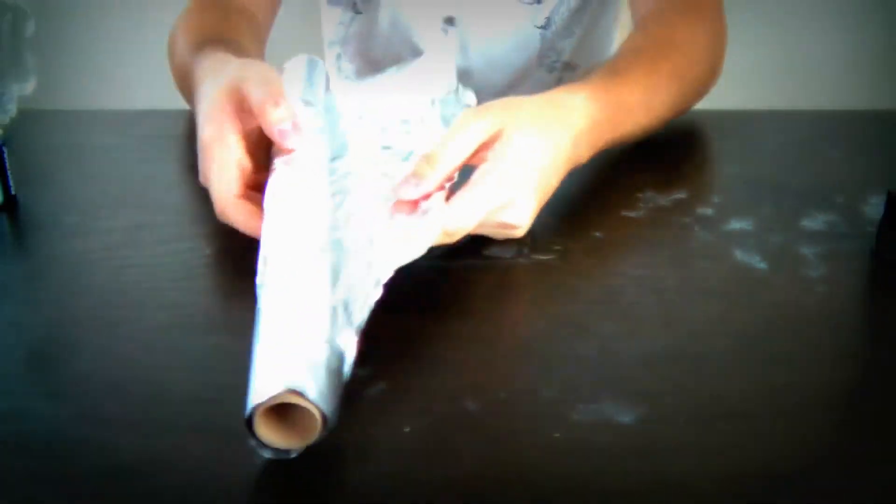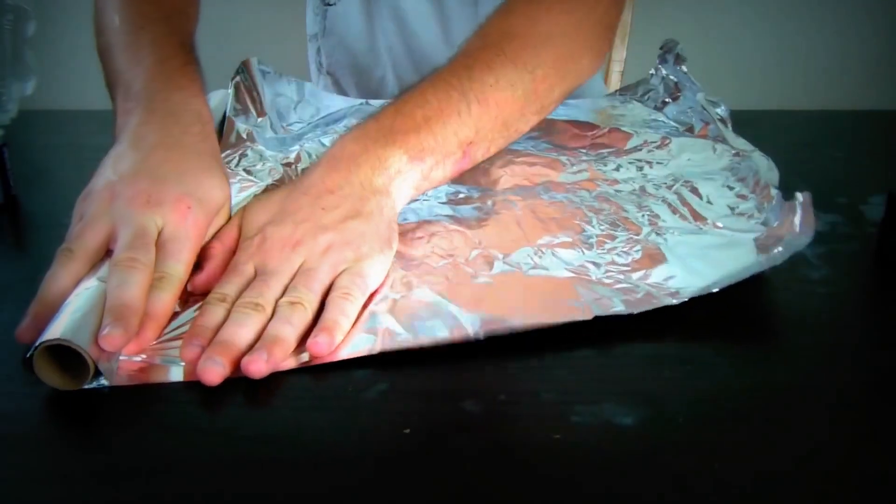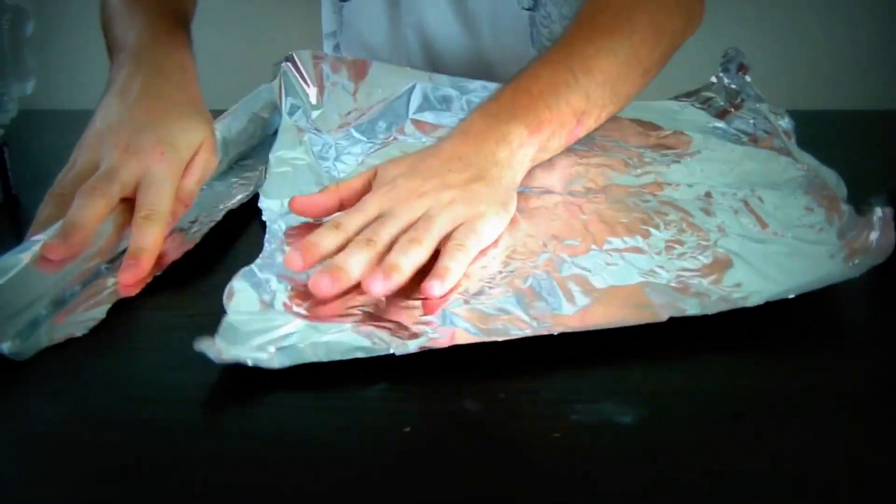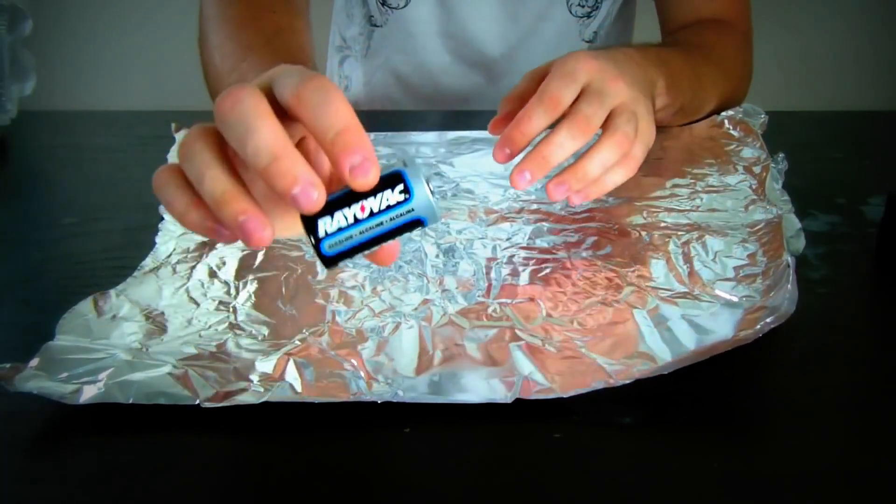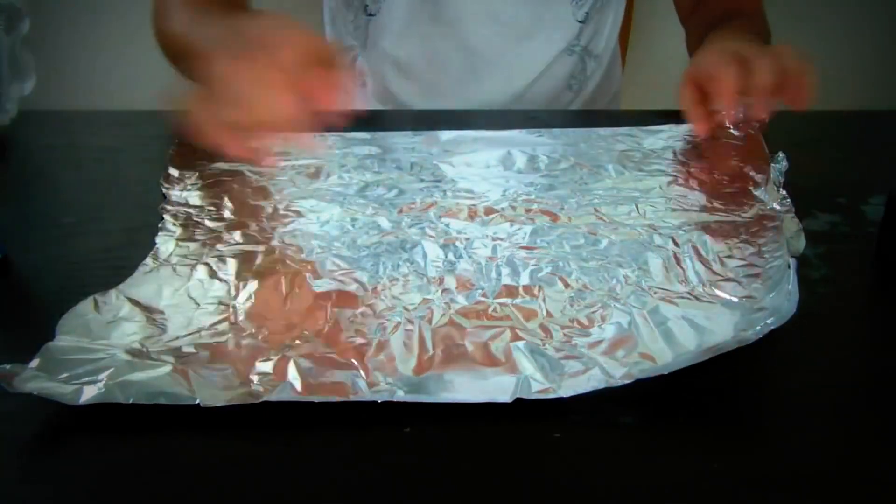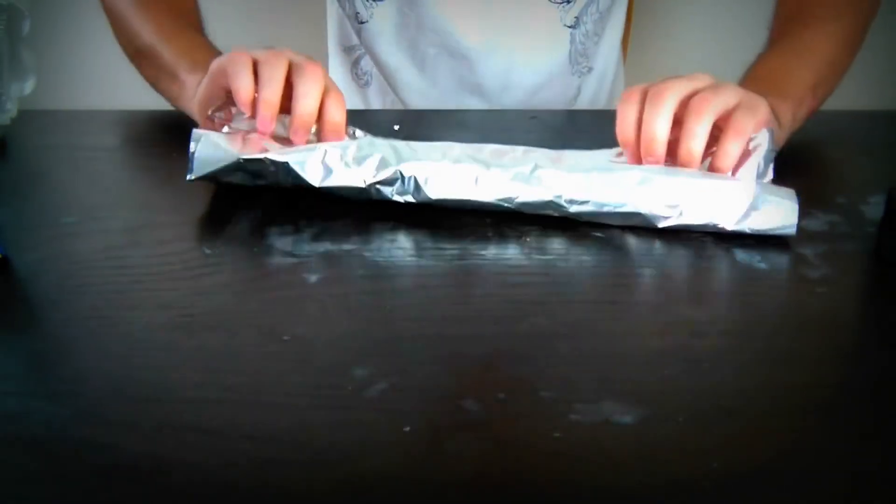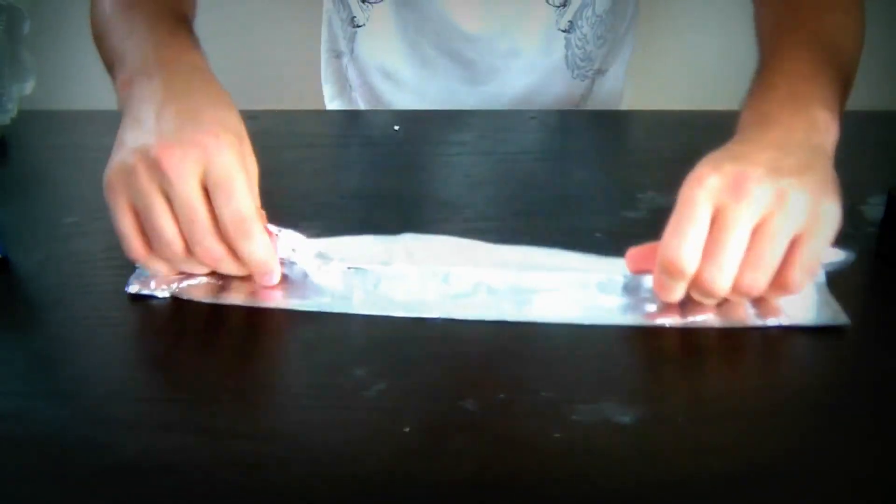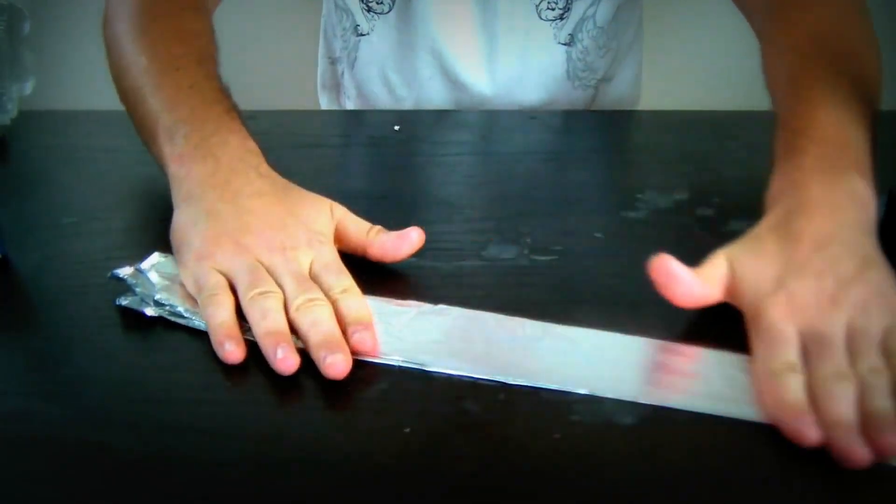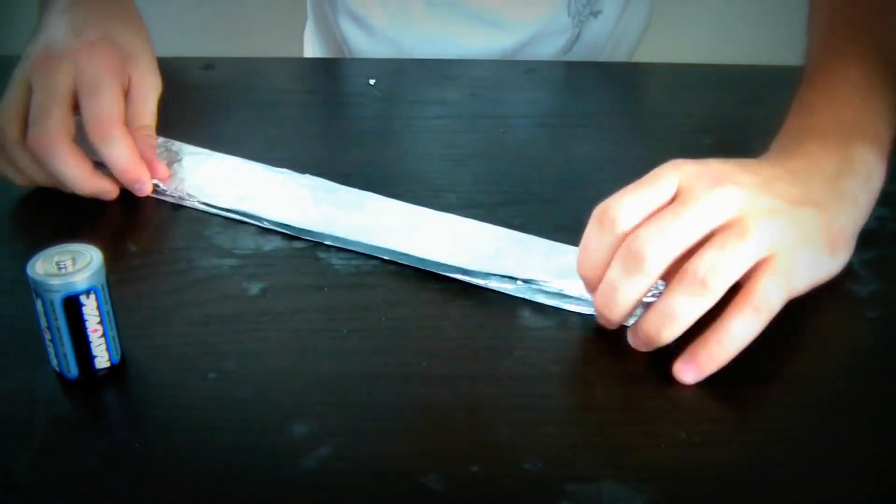We're going to get our aluminum foil. Not too much, this would be enough. Just take off that piece right here. Then we need to fold this aluminum foil in this shape. It's pretty easy. Fold it in half, then another half, then another half. You see it's almost the same size. You can fold a little bit more, but you don't have to. I'm going to do it. That's the same size right here.